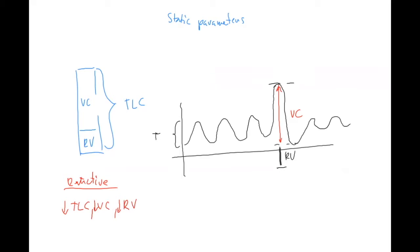In contrast, if you have obstructive disease, the residual volume could be normal or it could even increase - for example if there is air trapping. The total lung capacity could also be increased. These are the static parameters, and now let's jump to dynamic ones, which are much more important in these cases.